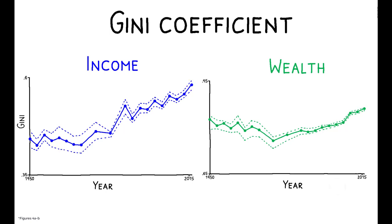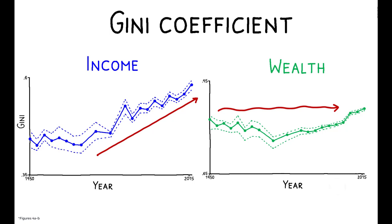Importantly, however, the trajectory shown in each of these figures is quite different. While income inequality rose steadily over this period, starting from a low of 0.43 in 1971 and reaching 0.58 in 2016, the wealth Gini fluctuated around 0.8 for much of this period and changed relatively little between 1950 and 2007.